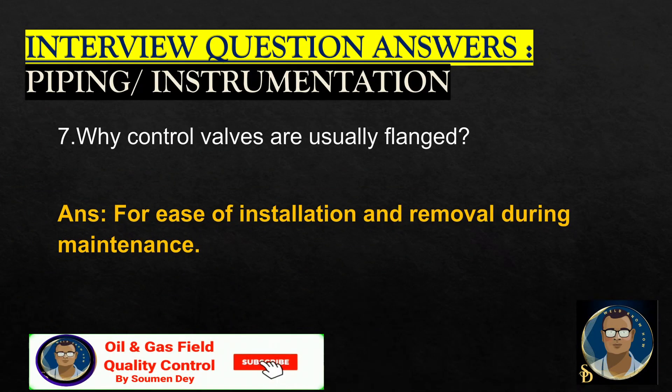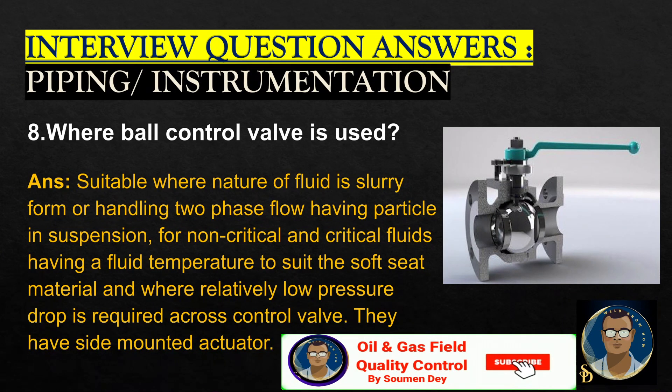Why are control valves usually flanged? For ease of installation and removal during maintenance. Where is a ball control valve used? Ball control valves are suitable where the nature of the fluid is in slurry form, or handling two-phase flow having particles in suspension, and for non-critical and critical fluids having a fluid temperature to sweep the soft seat material, and where relatively low pressure drop is required across the control valve. They have side-mounted actuators.